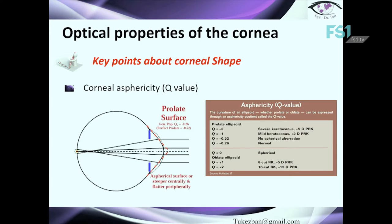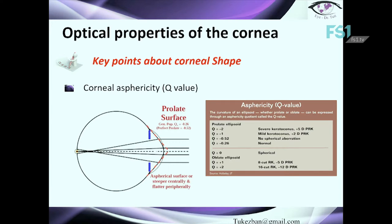Another important concept about corneal shape is the Q-value parameter — the corneal asphericity parameter — which is provided by various corneal examinations. The surface of the cornea is prolate, and the ideal Q-value is minus 0.52. By estimating this parameter we can assess the condition and shape of the cornea. For example, a Q-value of minus 2 suggests severe keratoconus or a patient with a five-diopter PRK surgery history, while a Q-value of minus 1 indicates mild keratoconus.